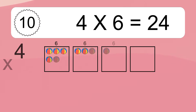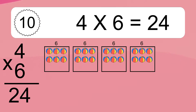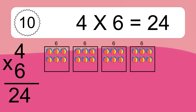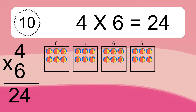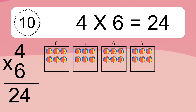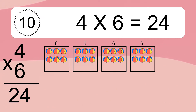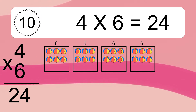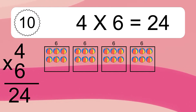4 times 6 equals what? 4 times 6 equals 24. We have 4 boxes and each box has 6 colorful balls inside. If you count all the balls in all the boxes together, you will have 4 times 6 balls. This equals 24 balls.